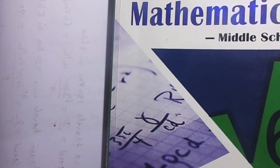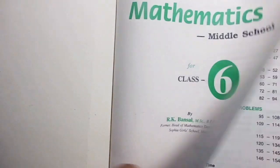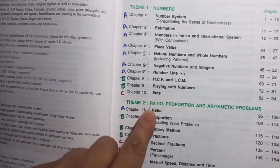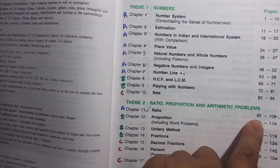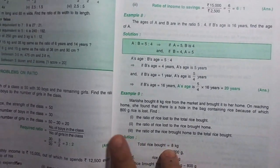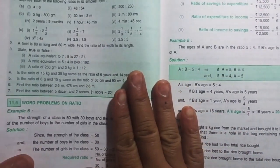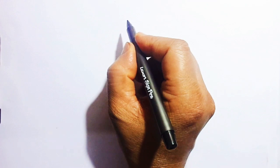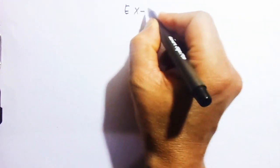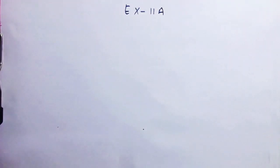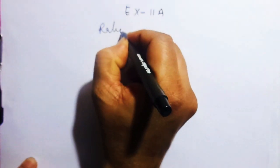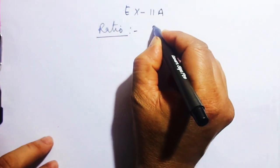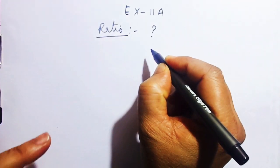Today we shall be starting ratio, chapter 11, pages 95 to 108, and concentrate entirely on Exercise 11a where we find so many beautiful problems. Hello everybody, today we shall be starting Exercise 11a. What does it talk about? It talks about ratio.